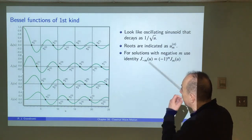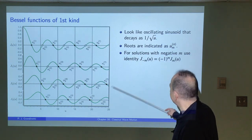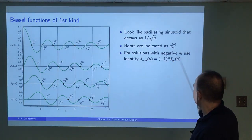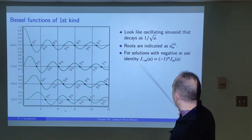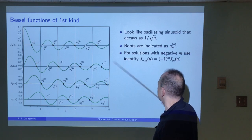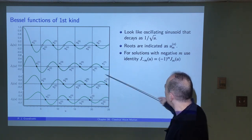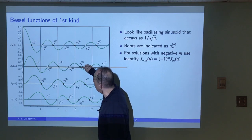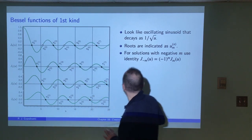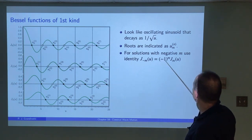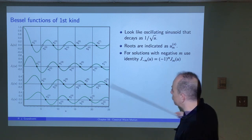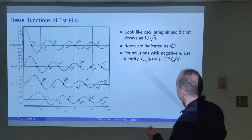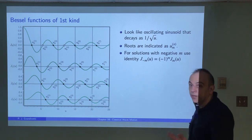We'll also need negative values of m. There's an identity: J₋ₘ = (−1)^m · Jₘ. So for m = 0, there's only one distinct solution. For m = 1 and −1, the function flips sign (−1)^1 = −1, so J₋₁ is J₁ flipped upside down. For m = 2, (−1)^2 = 1 so J₂ and J₋₂ look identical. For m = 3, J₋₃ is J₃ flipped upside down.